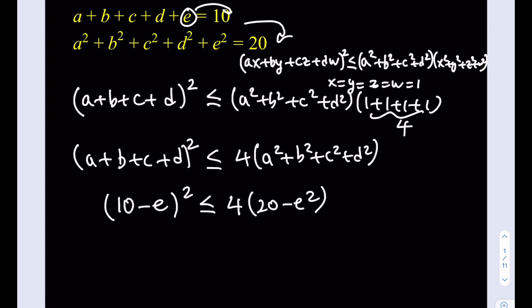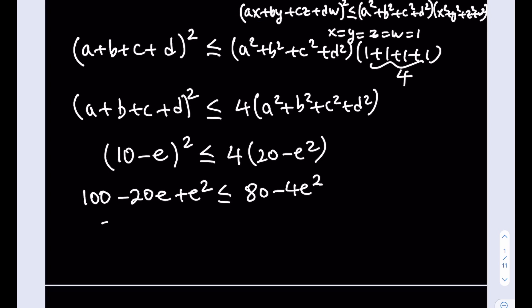Okay. Let's go ahead and expand it and simplify. 100-20e+e² less than or equal to 80-4e². All right, let's go ahead and put everything on the same side,